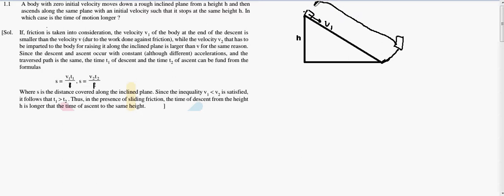If we consider friction, the velocity v1 of the body at the end of the descent is smaller than the velocity v2 that has to be imparted to the body for raising it along the inclined plane.